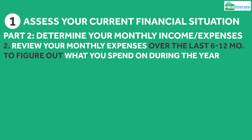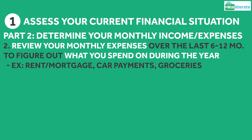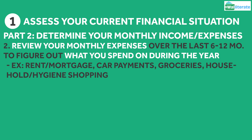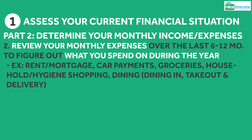For your monthly expenses, try to look at the last six months of your expenses at the bare minimum, but looking back at the last 12 months is even better, so you can get a good idea of what you're spending money on throughout the year. Your expenses can include things like rent or mortgage payments, car payments, groceries, household and hygiene purchases, dining, and gas.